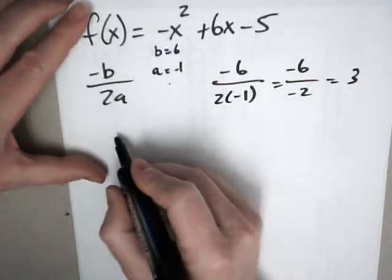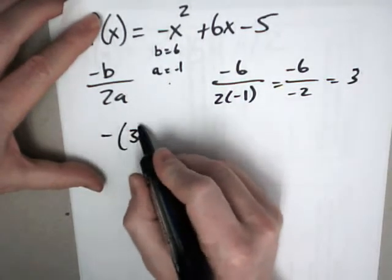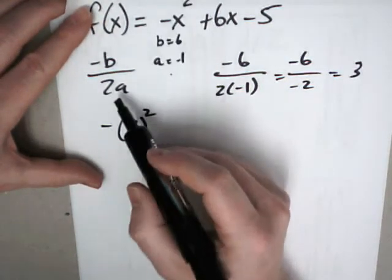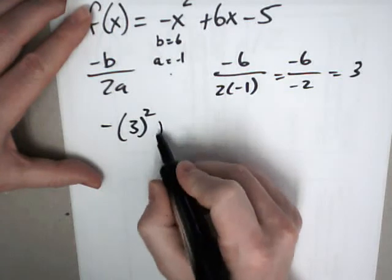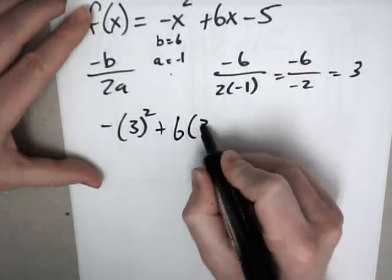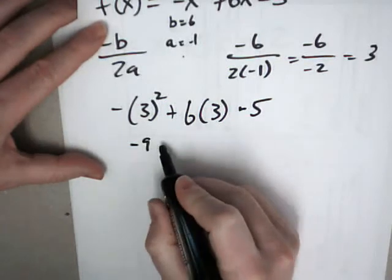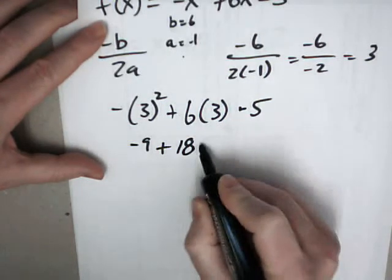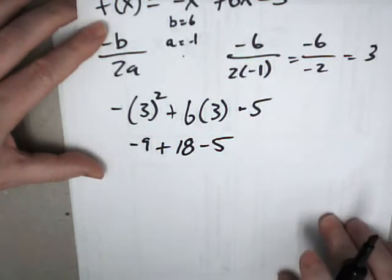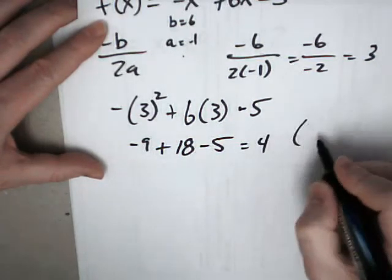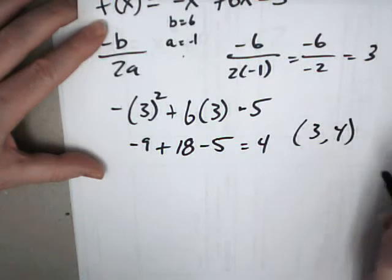Take your 3 and plug it back in. Now notice how I've got the negative on the outside here. When I plug it back in, it's on the outside. So plugging it back in, that's negative 9 plus 18 minus 5. So that should be 4. So my 3, 4 is my vertex.